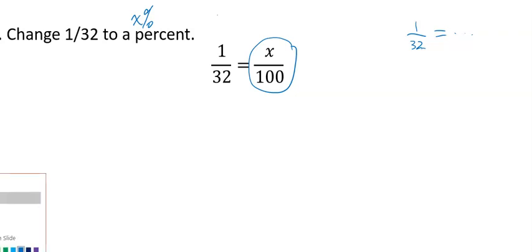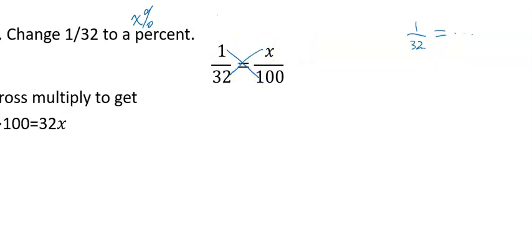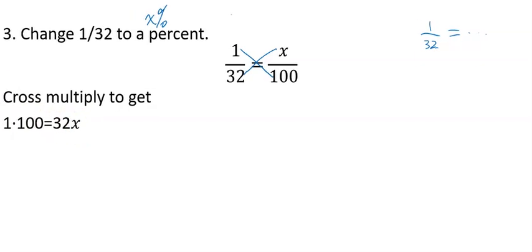Once we set this up, we have a proportion. We can cross-multiply to get 1 times 100 and 32 times x, because for a proportion, the cross-products are equal.